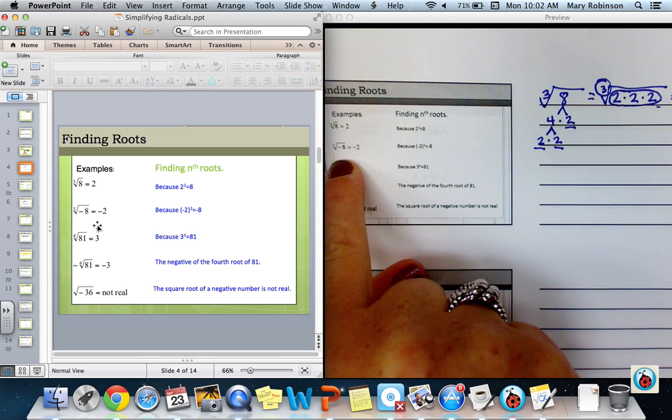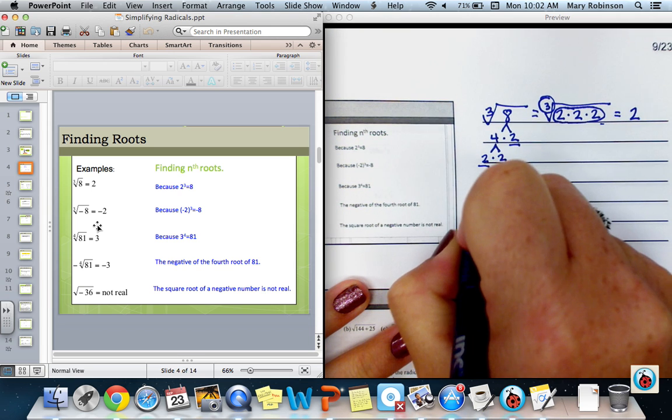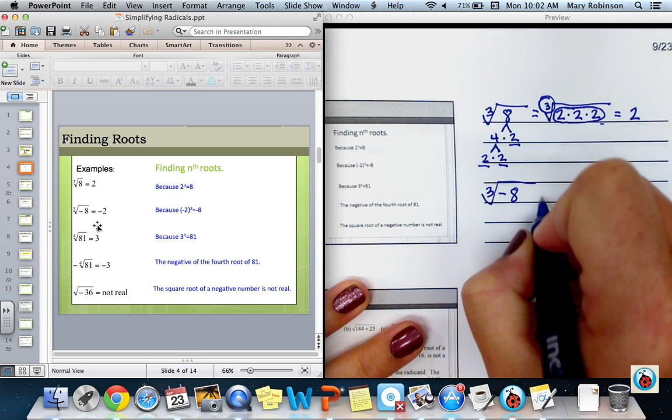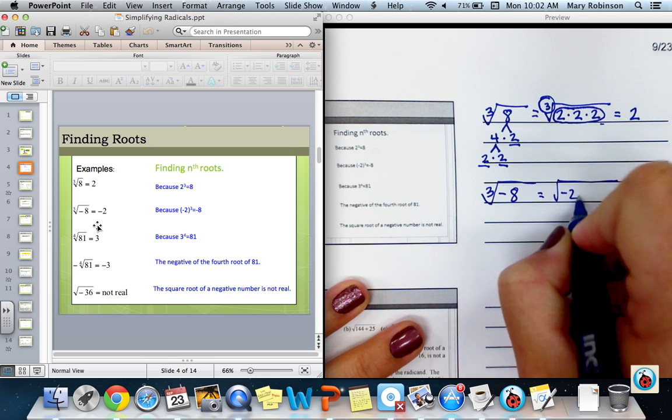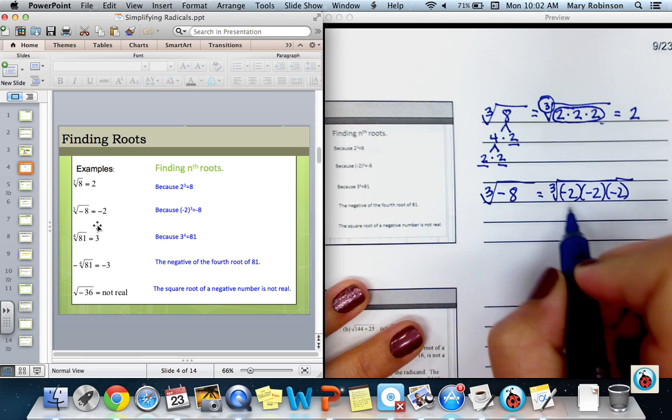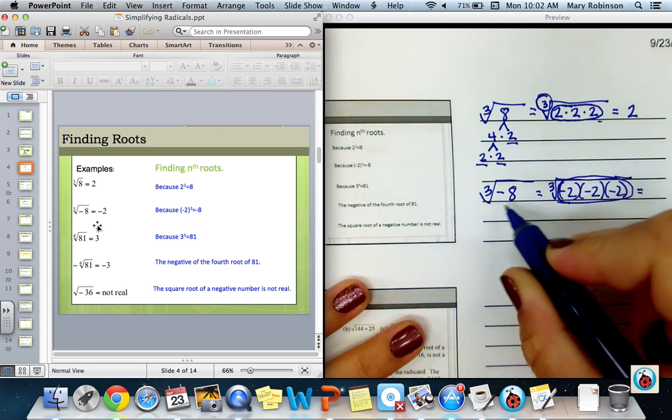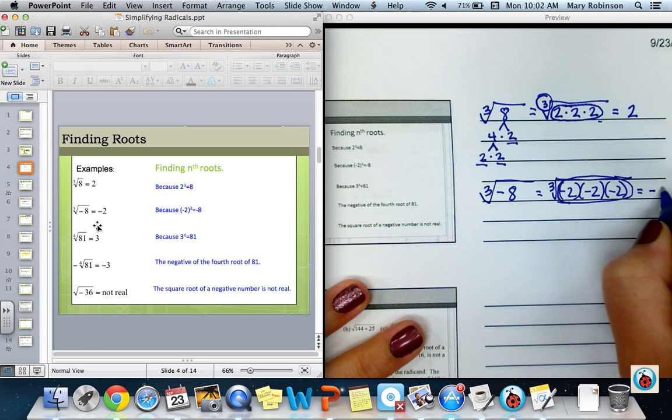Similarly, for the cube root of negative 8, I can break this down to a negative 2 times a negative 2 times a negative 2. And because I can form one group with 3 negative 2's, the cube root of negative 8 is negative 2.